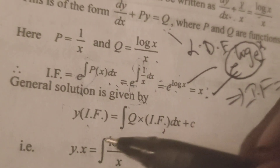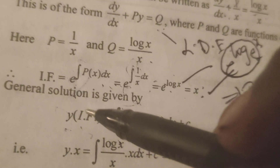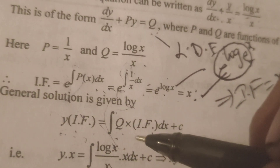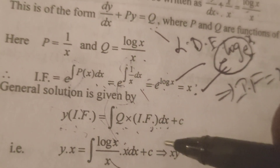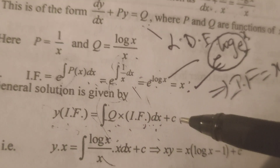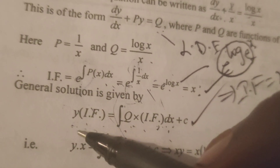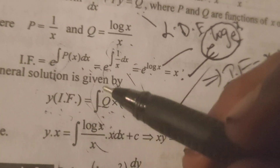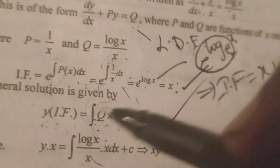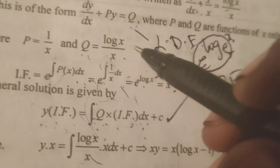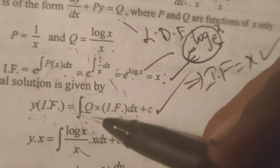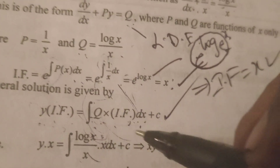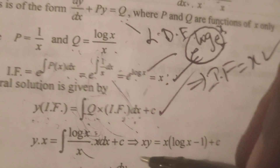Find out the general solution. The general solution formula means y into integrating factor equals to integral of Q into integrating factor dx plus c. Substituting: y into x equals integral of Q(x), which is log x by x, into x dx plus c.